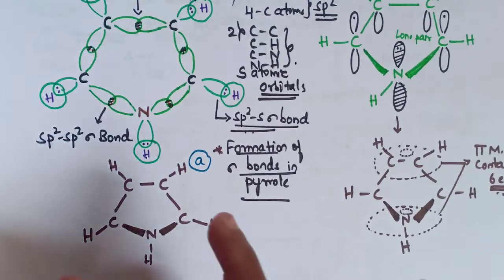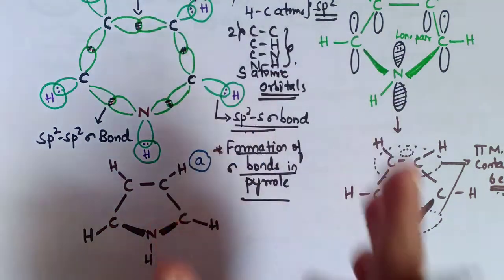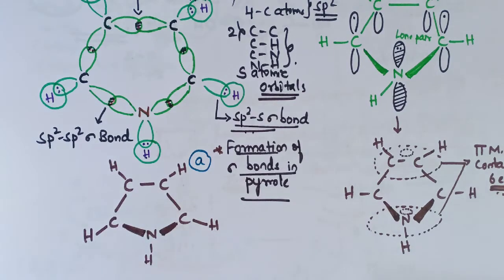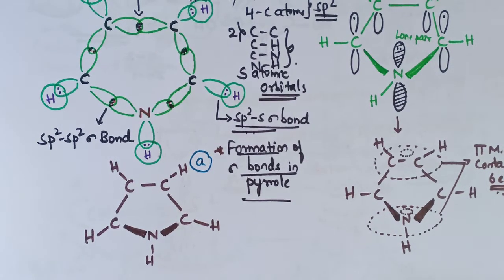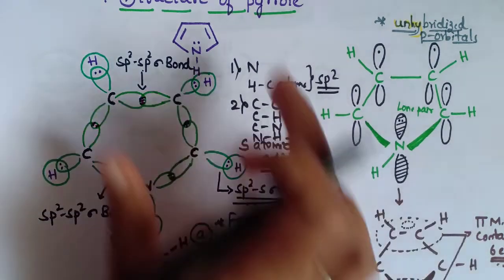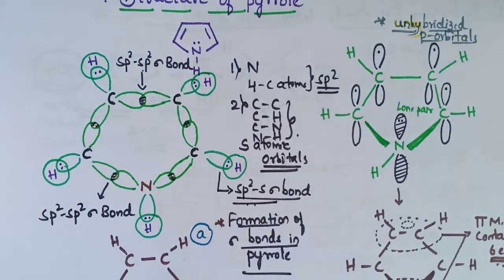This diagram shows the complete formation of sigma bonds in pyrrole. Now moving to the next part: each carbon atom and nitrogen atom also possesses an unhybridized p orbital, and these are perpendicular to the plane of the sigma bonds.